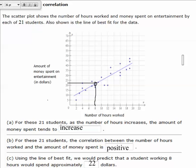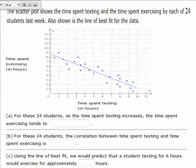All right, let's look at another example. So here is another example. This time, the scatter plot shows the time spent texting and the time spent exercising by each of 24 students last week. We also have here the line of best fit going through.